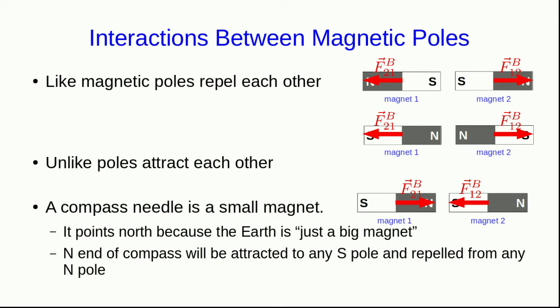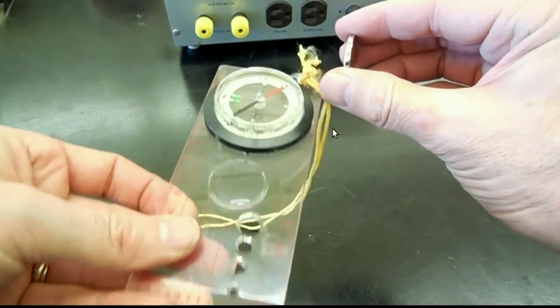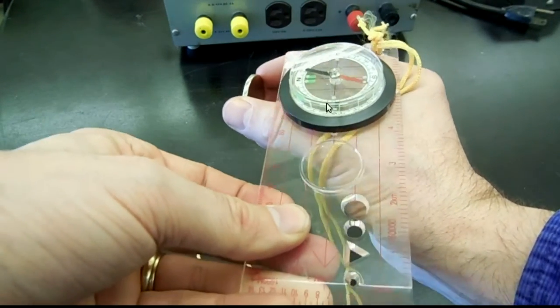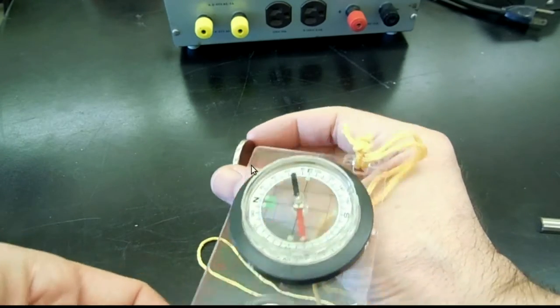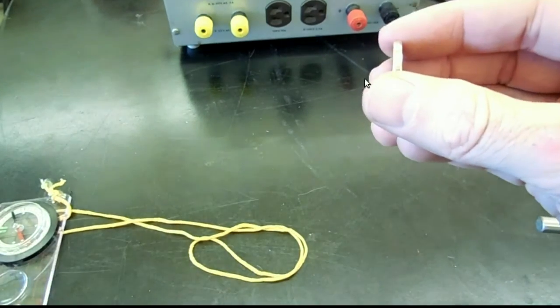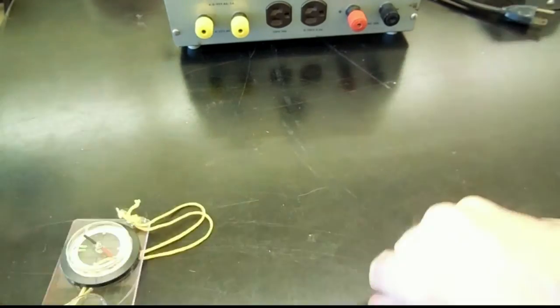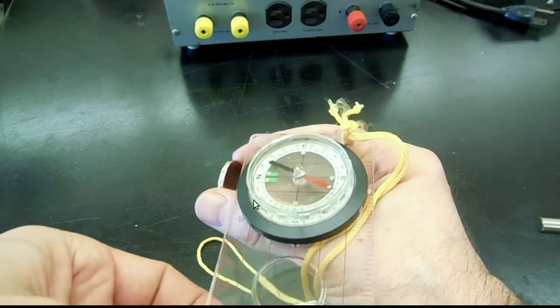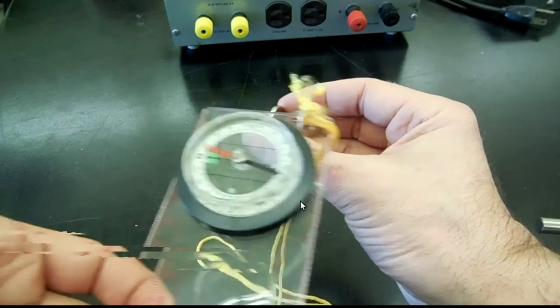The north end of a compass will be attracted to any south-seeking pole and repelled from any north-seeking pole. This makes a compass very good for diagnosing which pole is which on a magnet that isn't labeled. So for example, this rare Earth magnet is unlabeled. The red end of the compass needle is the north-seeking end. The black end is the south-seeking. So now since we see one face attracts the red end and the other face attracts the black end, then the face on the left must be the south-seeking end, and this one on the right must be the north-seeking end of this rare Earth magnet.